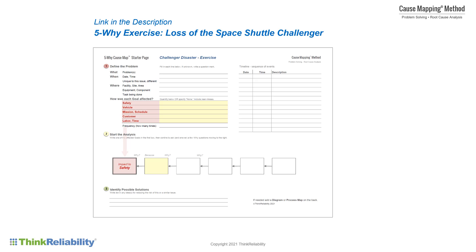If you'd like to test this approach for the problem definition and then build a 5-Why cause map for the Challenger incident, there's a link to an exercise in the problem description. You can try this on your own or evaluate it with your group. I hope you find some of this information helpful. Thanks for watching, and have a good day.